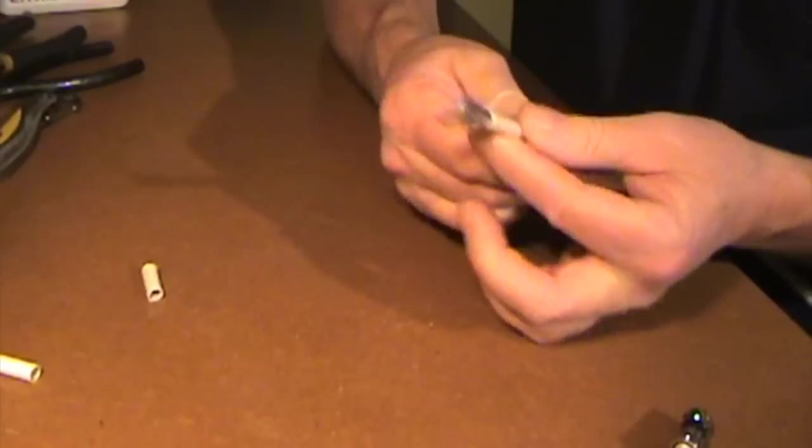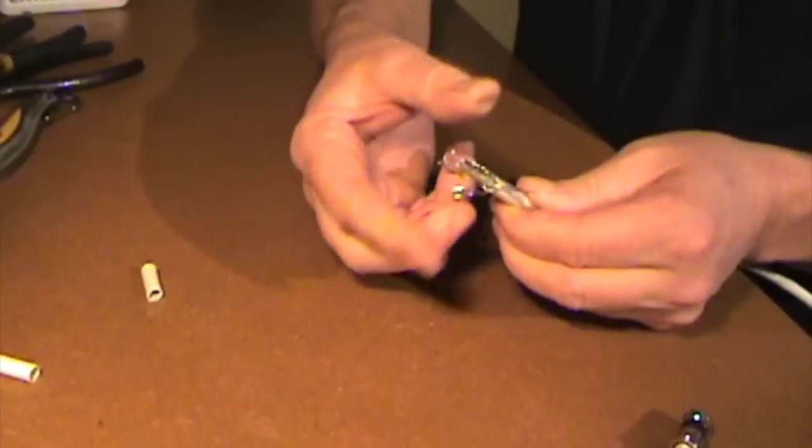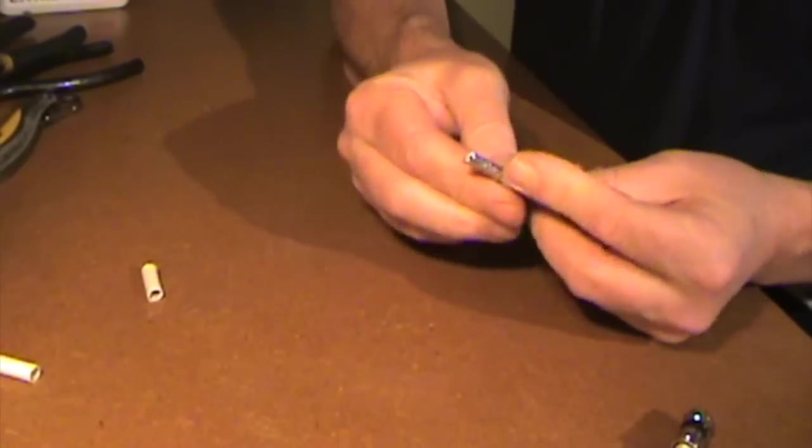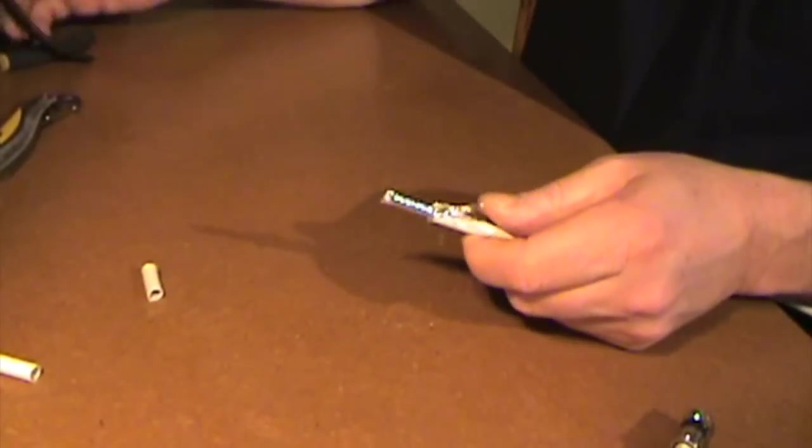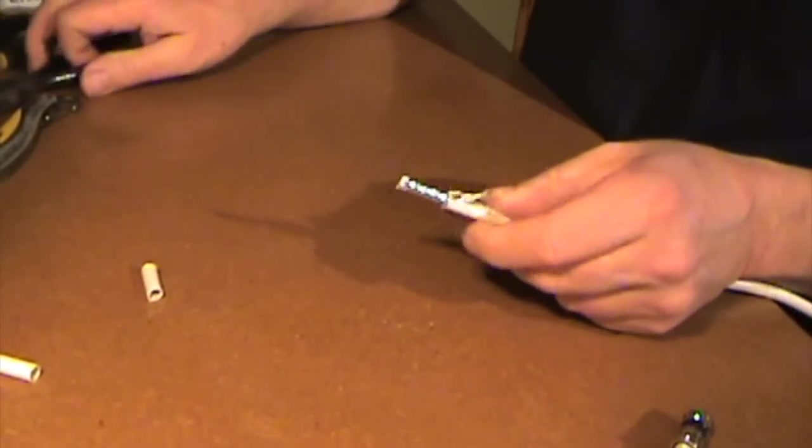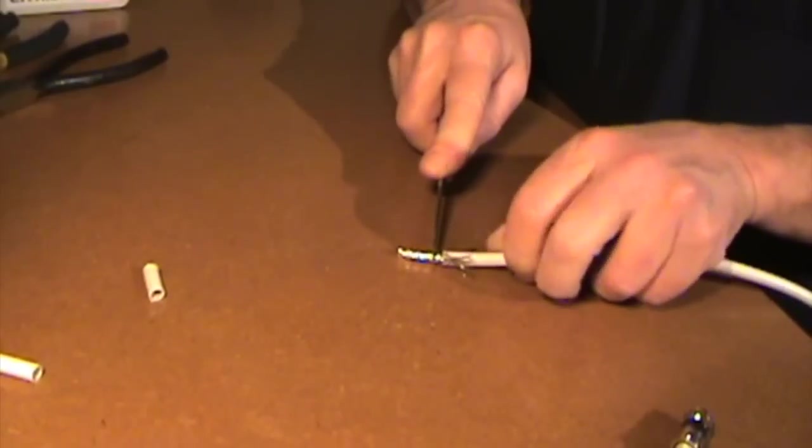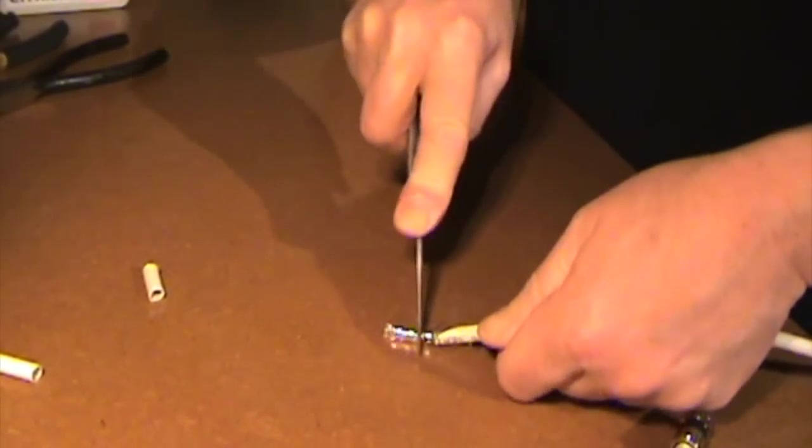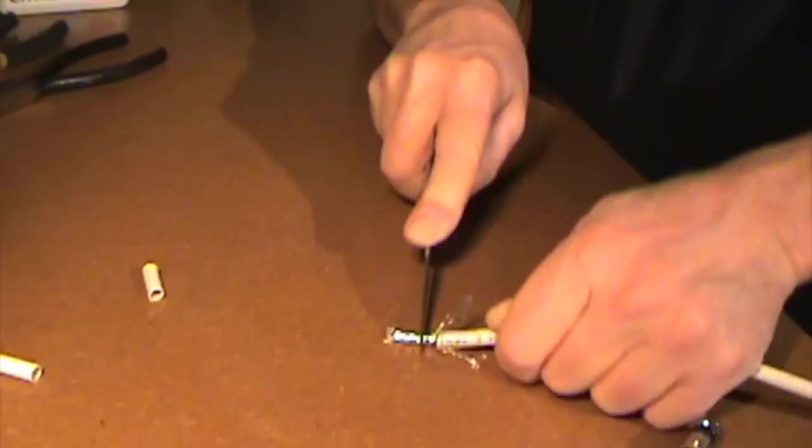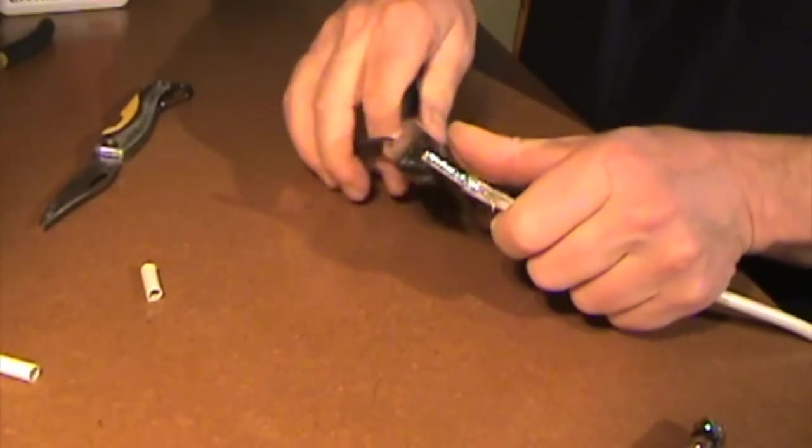Now you've got to pull back the sheathing and you can expose the foiled portion of the inner cable. And we'll be removing that part as well. Just roll it again with the knife. You'll feel when you're down to the center conductor, and then you can just pull it off.